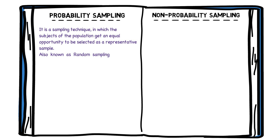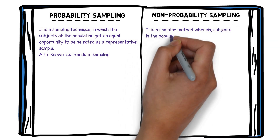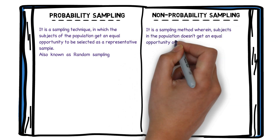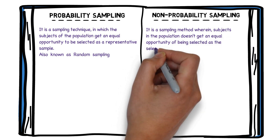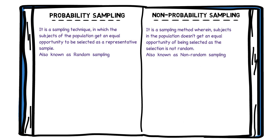Coming to non-probability sampling, it represents a group of sampling techniques where data scientists select from a population that they are interested in studying, but they don't randomly select the sample. They decide in advance that they have to study this, so they select this particular sample from the population. The core characteristic of non-probability sampling is that the samples are selected based on the subjective judgments of researchers or scientists rather than random sampling.